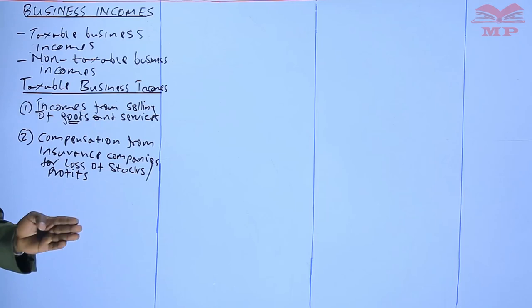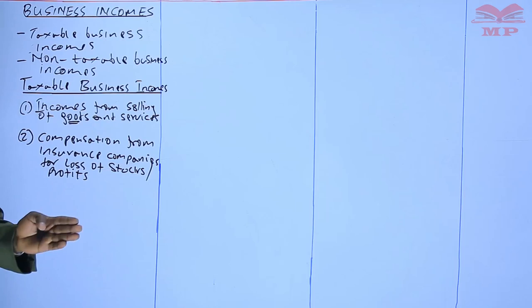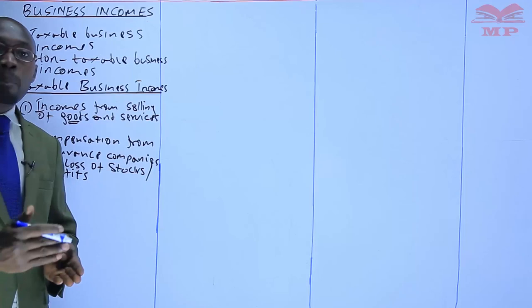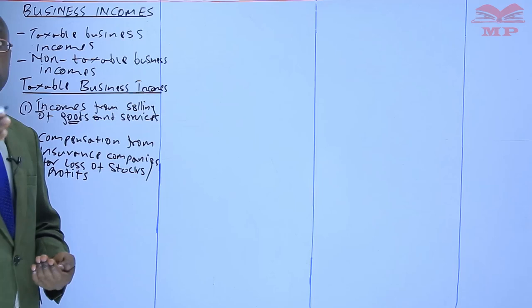Similarly, you can insure your business against loss of profits. If in a given year your business makes a loss of 5 million, the insurance company will compensate you that 5 million. When you receive that money from the insurance company, it is an income to you and it is supposed to be a taxable income.